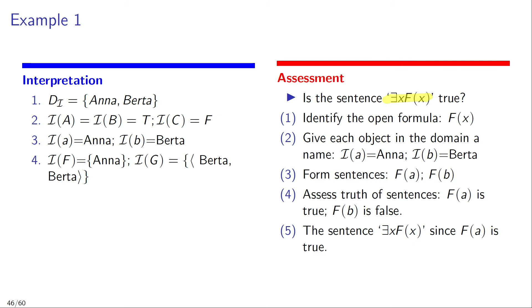First step, we identify the relevant open formula — in this case that formula is Fx. Second step, we give each object in the domain a name. Our interpretation already does that for us: A refers to Anna and B refers to Burda. In the third step, we form all sentences that result from replacing the variable x in our open formula Fx by one of the names assigned in step 2. That gives us two sentences: FA and FB. In the fourth step, we assess the truth of those sentences — FA is true and FB is false.